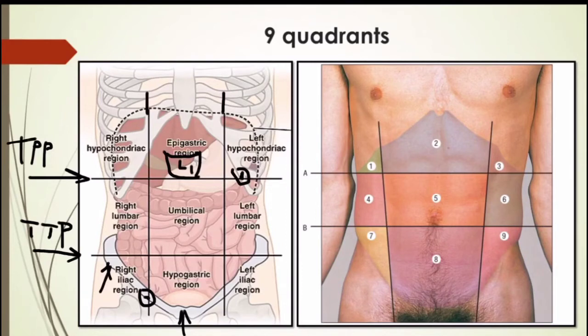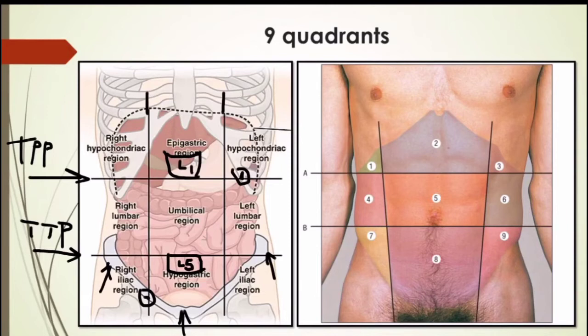The transtubercular line crosses the iliac tubercles on either side — the iliac tubercle is present about five centimeters behind the anterior superior iliac spine. When traced posteriorly, this line also passes along the upper border of L5, or you can say the intervertebral disc between L4 and L5. So that is your transtubercular plane. The regions divided by these four lines — starting from the center — are as follows.